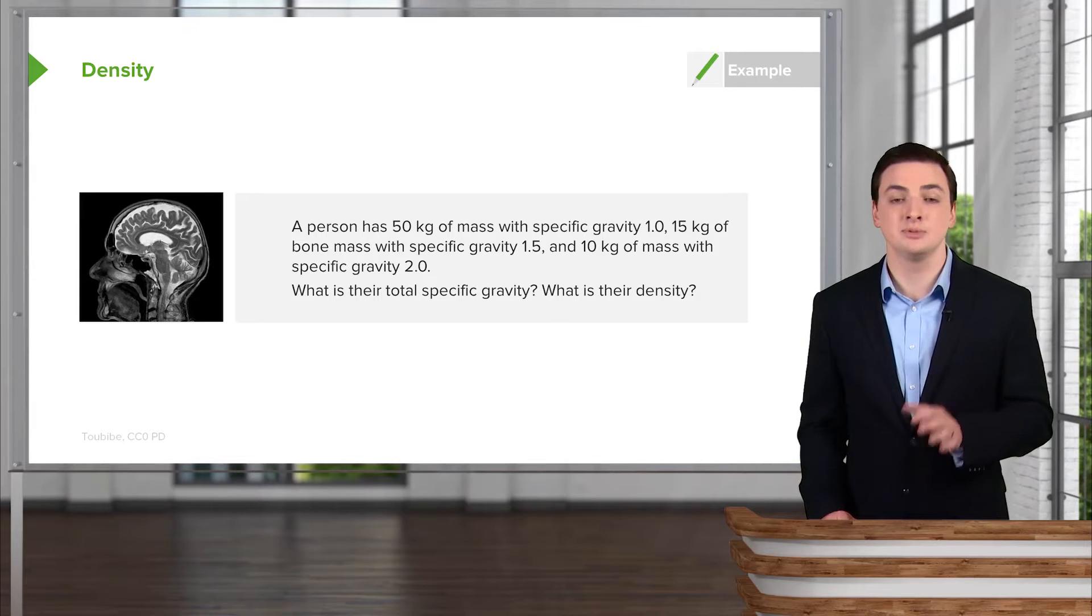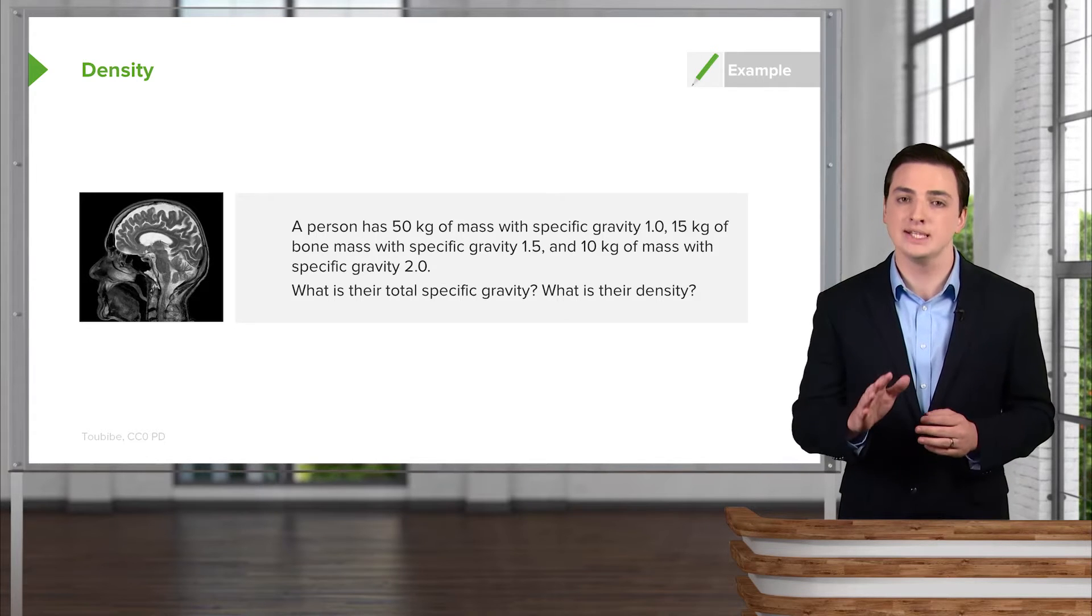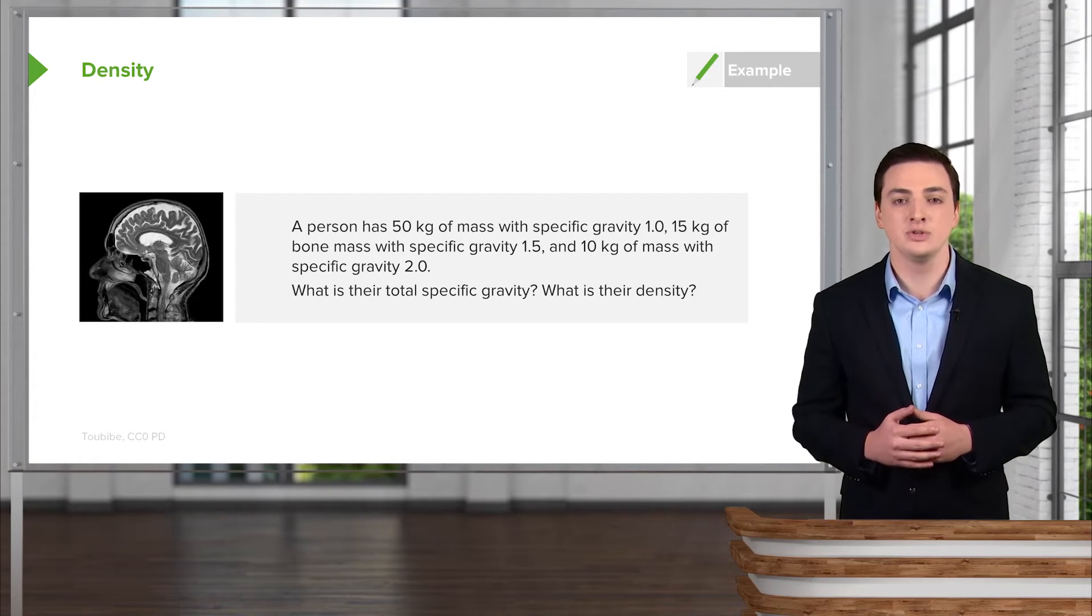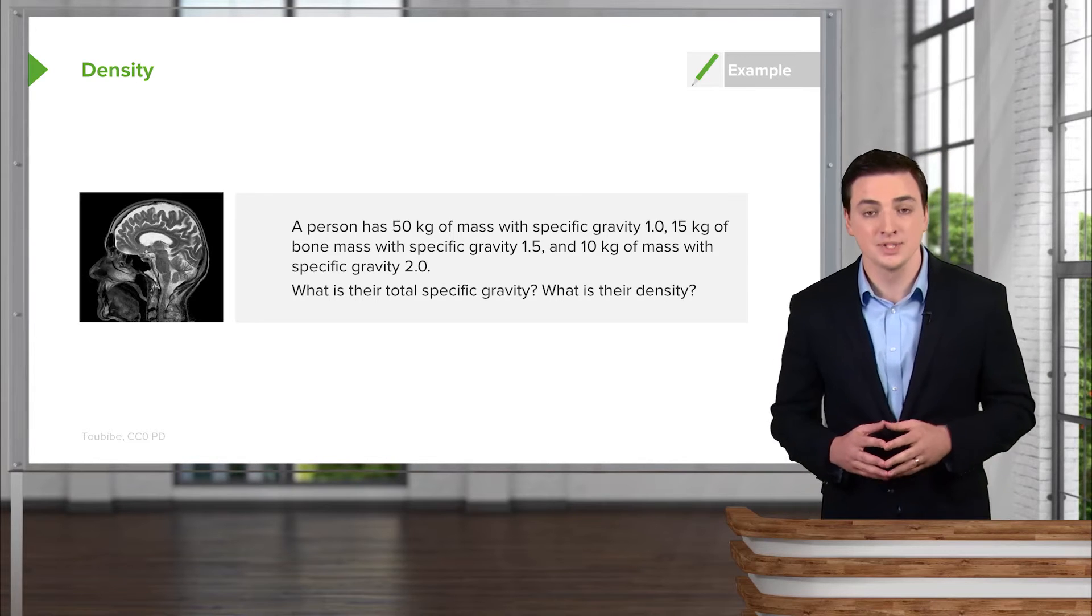Using the definitions of density and specific gravity that we've already talked about, go ahead and give this a shot, see if you can do it using the definitions we've introduced so far, and then we'll try it here. So for this problem, we have three different kinds of mass that the person has. We have 50 kilograms with specific gravity 1.0, 15 kilograms with specific gravity 1.5, and 10 kilograms with specific gravity 2. The question is, what is the total specific gravity first?